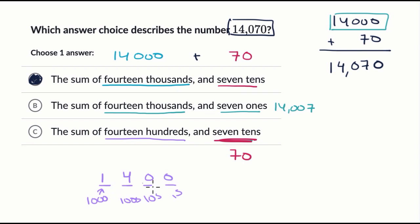So fourteen hundred looks like this. So if you were to add fourteen seventy, you would get 1,470, not what they originally asked us about. So we can feel very good about choice A.